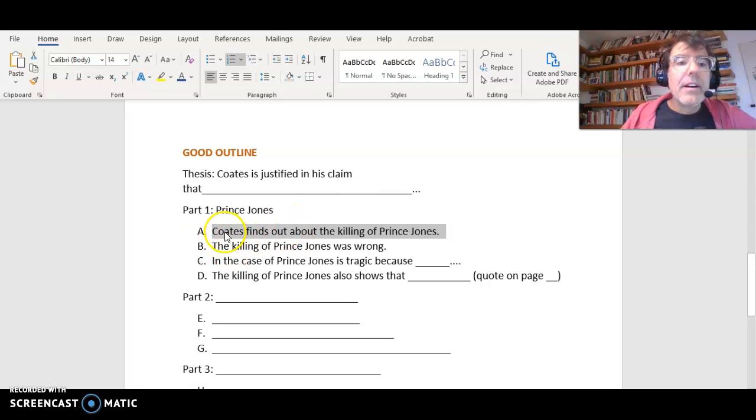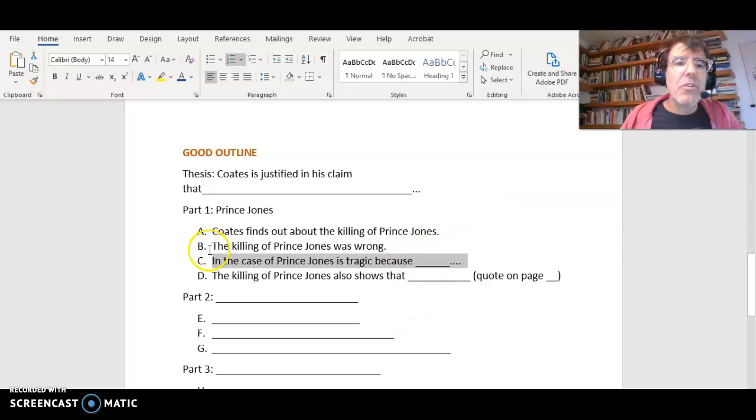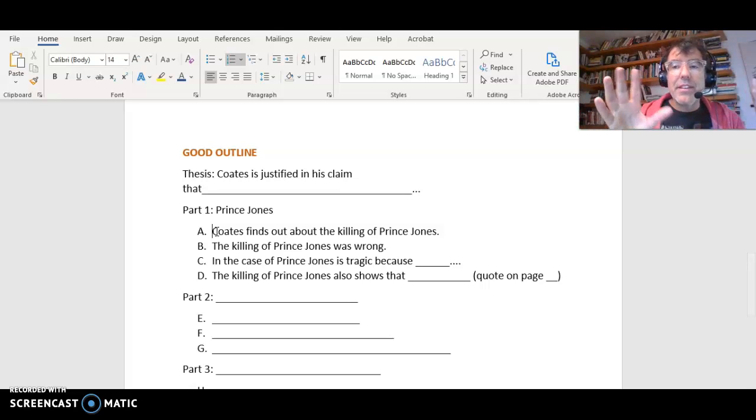So A is just one paragraph, B is a different paragraph, C is a different paragraph. Now you're really starting to make a plan for a long paper. You might have a whole paragraph just saying that Coates finds out about the killing of Prince Jones. This is kind of like setting the stage - you're giving the information, what happened.